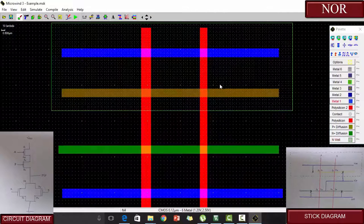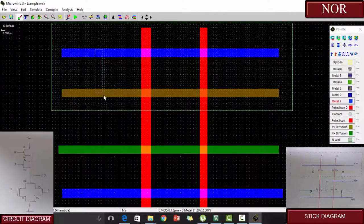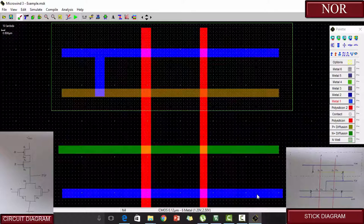Now as per the stick diagram, we are going to connect the metal to the P-diffusion. Now similar to that, the metals are connected to N-diffusion too.